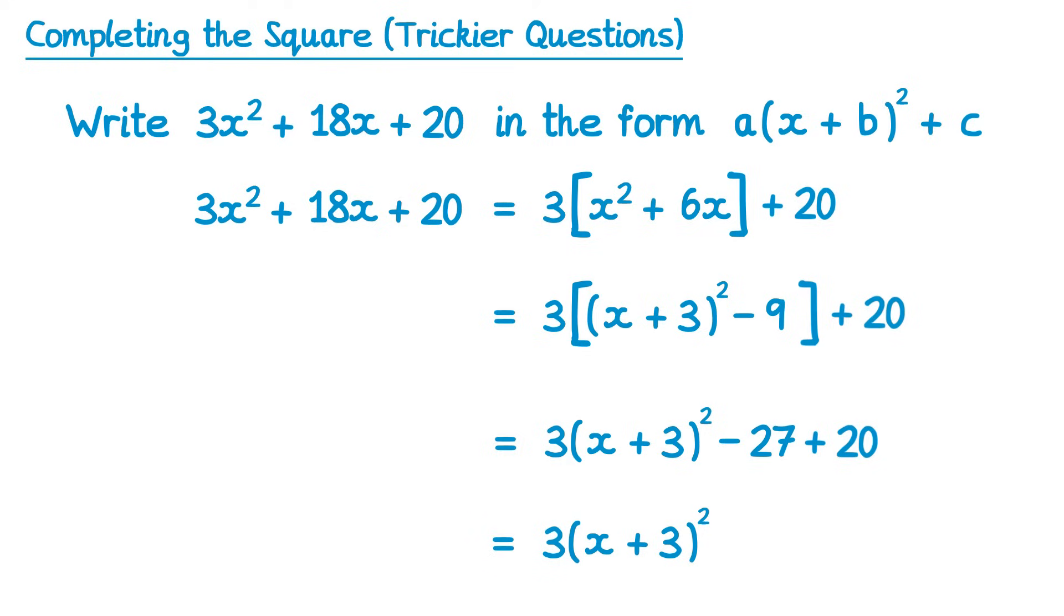The final step here is just to simplify. We have negative 27 add 20, which when you simplify will give you negative 7. And we've now finished the question. If we compare our answer to the completed square form in the question, you'll see that a is 3, b is also 3, and c would be negative 7.